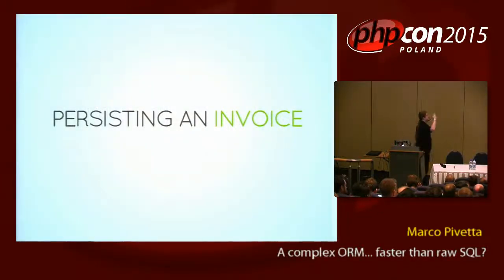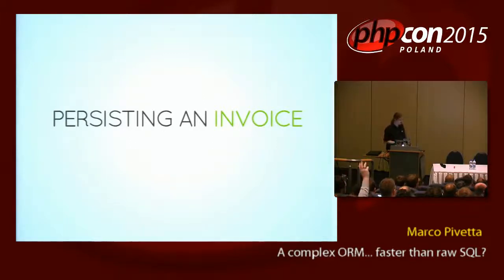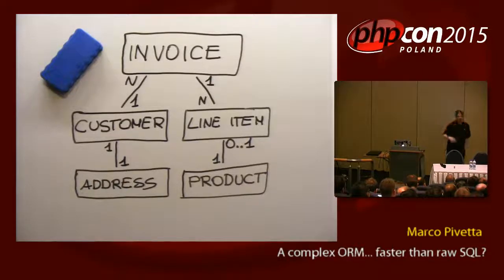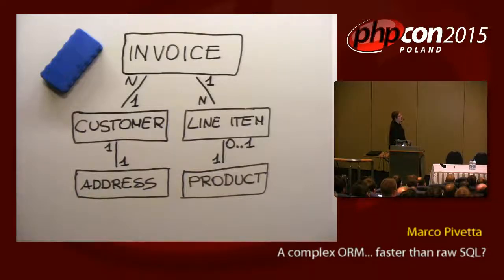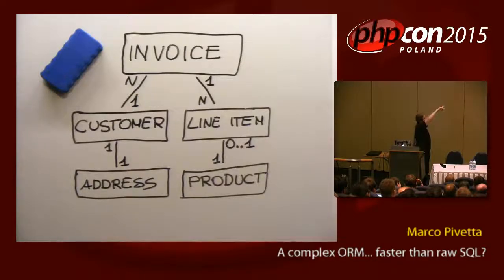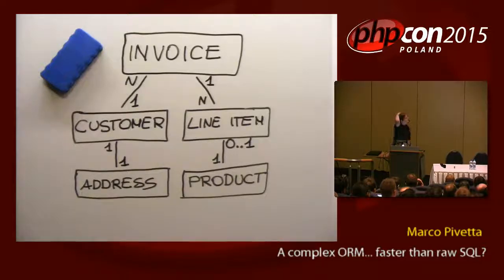Let's take an example and see what the point of this stuff is, and why is it so complicated and complex. Here's a pretty typical example. Let's say that we design this into different tables — some table-based design for our application. We have an address, a customer, an invoice, a line item, and a product — all with their own relations. The customer can't exist without an address. The invoice can't exist without the customer and the line items. And the line items can't exist without the product.